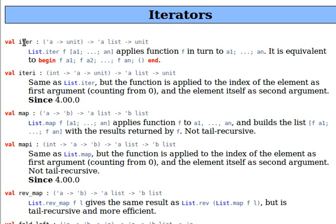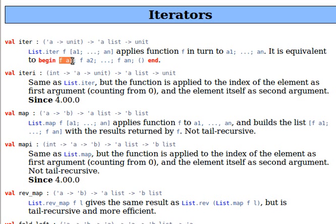Now the first one is list.iter. What it does is it applies a function to every element of the given list. As you can see here, list.iter — f is a function and this is an input list. What this means is that f will be applied to the first element, to the second element, the third element until the last element of the list. This is equivalent to f(a1), f(a2), f(an), where a1, a2, an are the elements of the list.